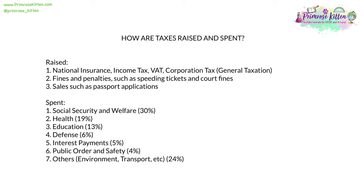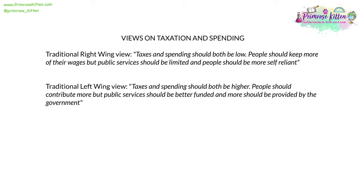Taxes are raised and spent in several ways. Taxes are raised through national insurance, income tax, VAT, and corporation tax — collectively known as general taxation. Fines and penalties, such as speeding tickets and court fines, also raise revenue for the government. And sales, such as passport applications and driving licence applications. They're spent in many ways. The largest part of government spending is social security and welfare, which takes roughly a third, followed by health, education, defence, interest payments, public order and safety, and then others such as the environment and transport, which collectively get to 24%. There are two traditional views on taxation and spending. The traditional right-wing view is that taxes and spending should both be low — people should keep more of their wages, but public services should be more limited and people should be more self-reliant. The traditional left-wing view is that taxes and spending should both be higher — people should contribute more, but public services should be better funded, and more should be provided by the government.